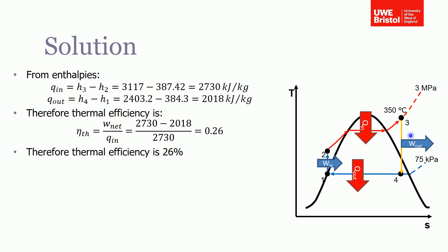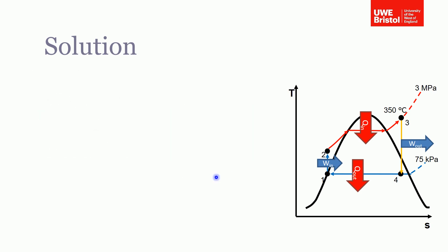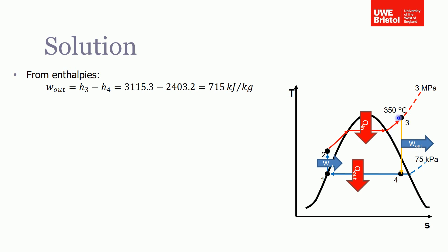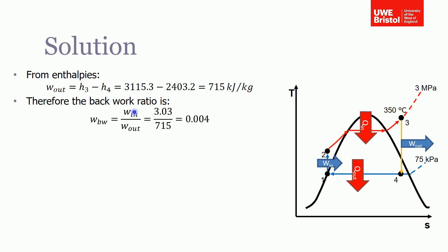The second part asked for the back work ratio — the ratio of work input to work output. The turbine work output equals the change in enthalpy between states three and four: 715 kilojoules per kilogram. We already calculated the pump work input as 3 kilojoules per kilogram. Dividing pump work by turbine work gives a back work ratio of just 0.4%, which is very low compared to an Otto or diesel cycle — a notable advantage of the Rankine cycle.